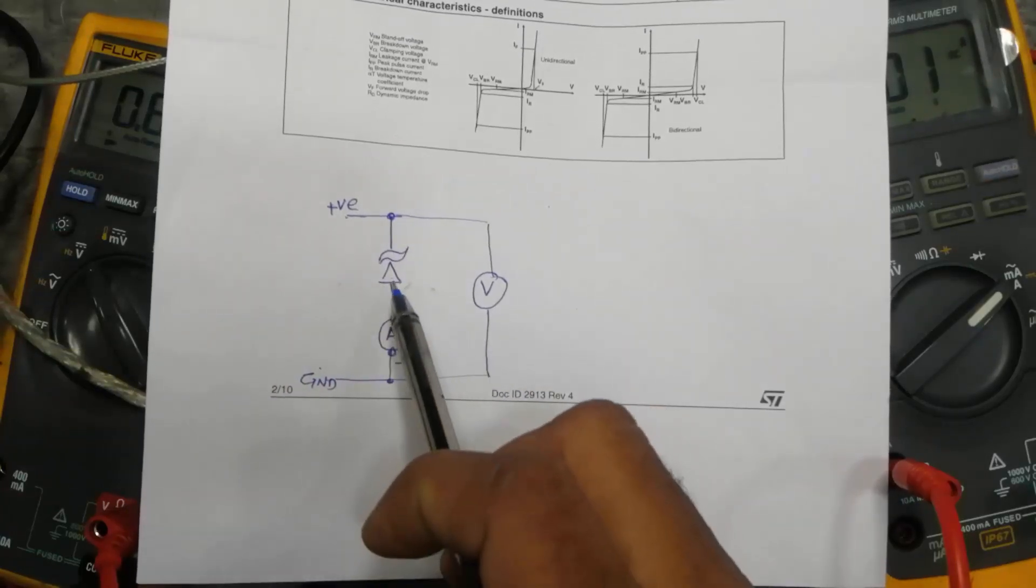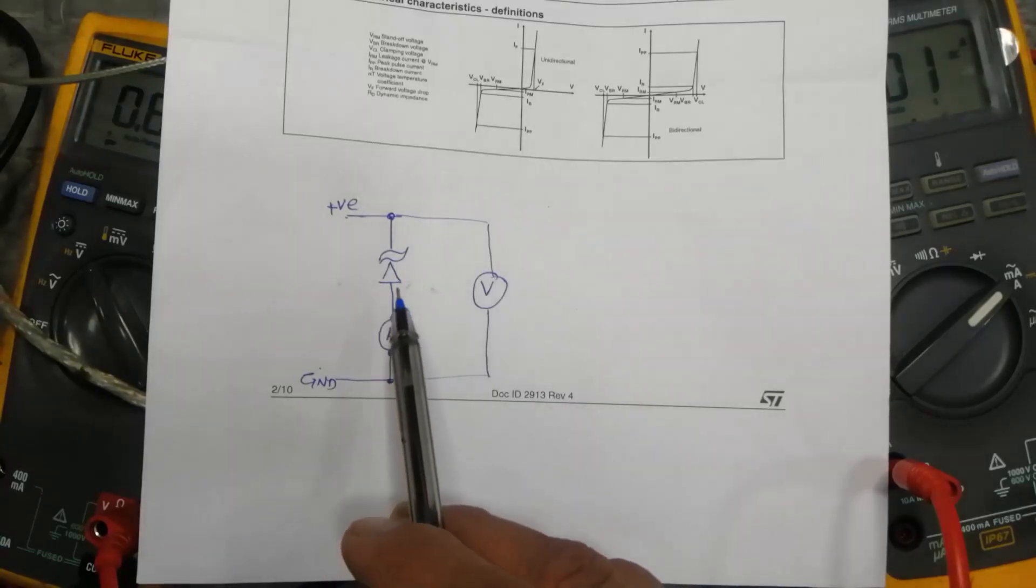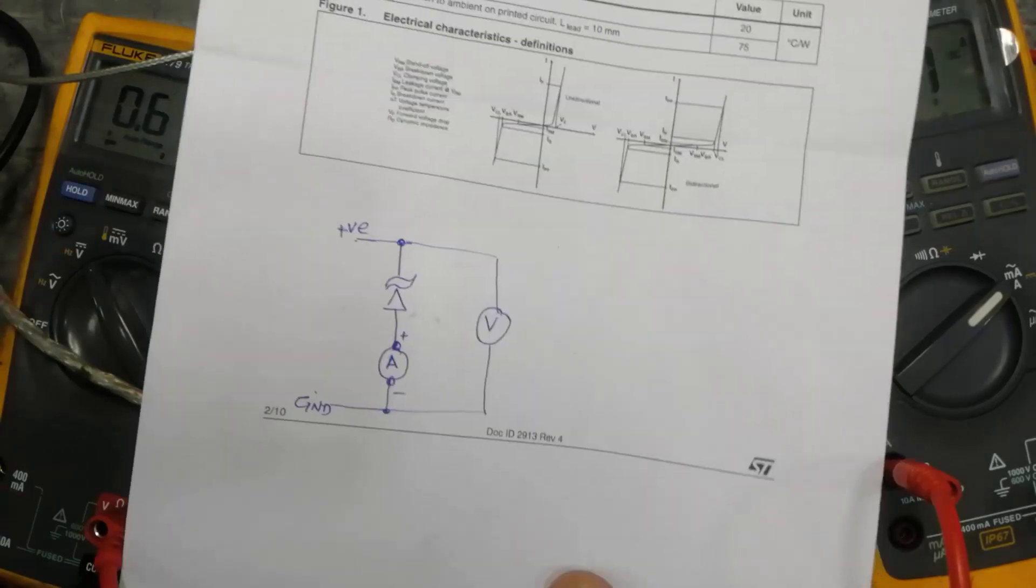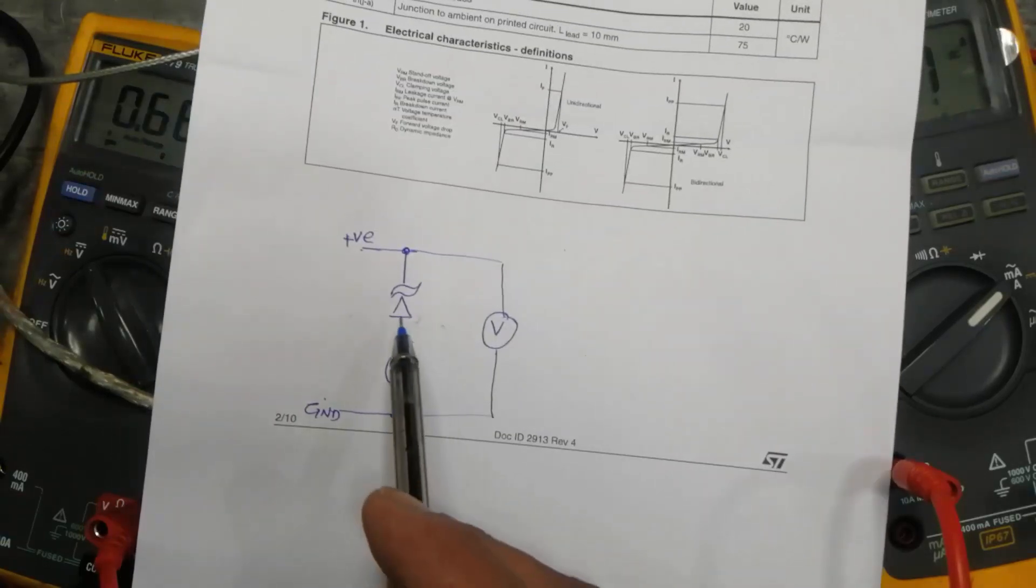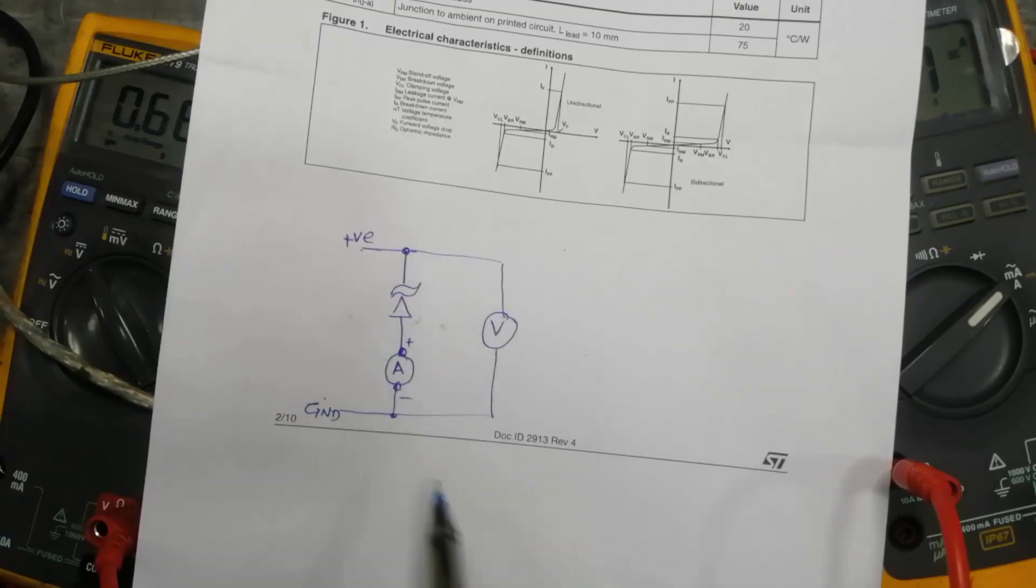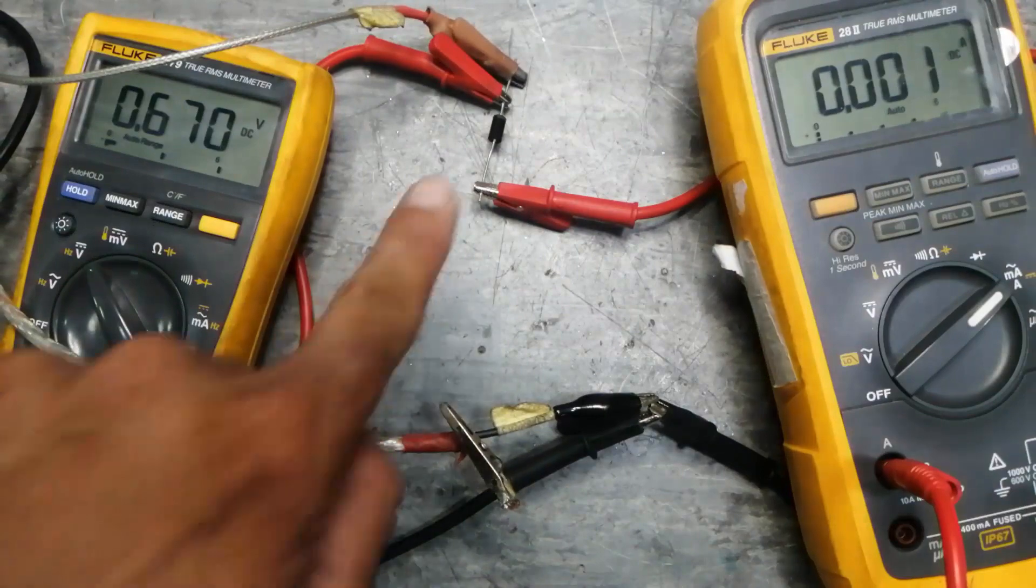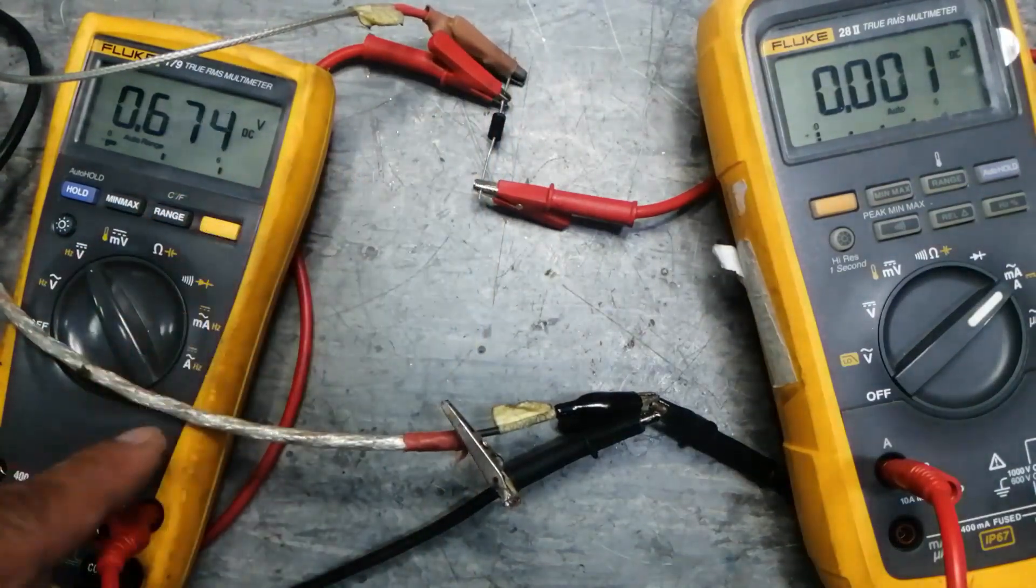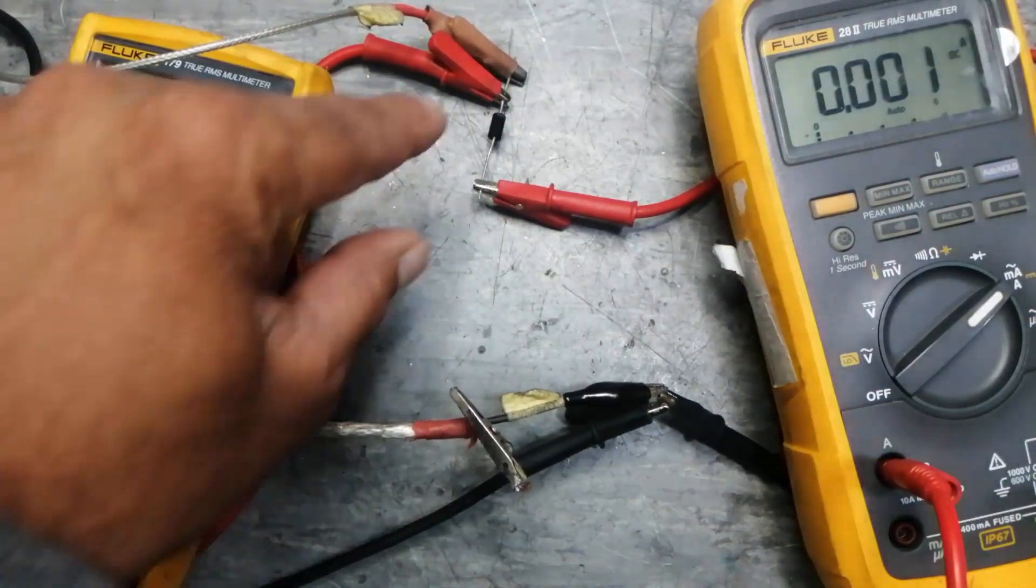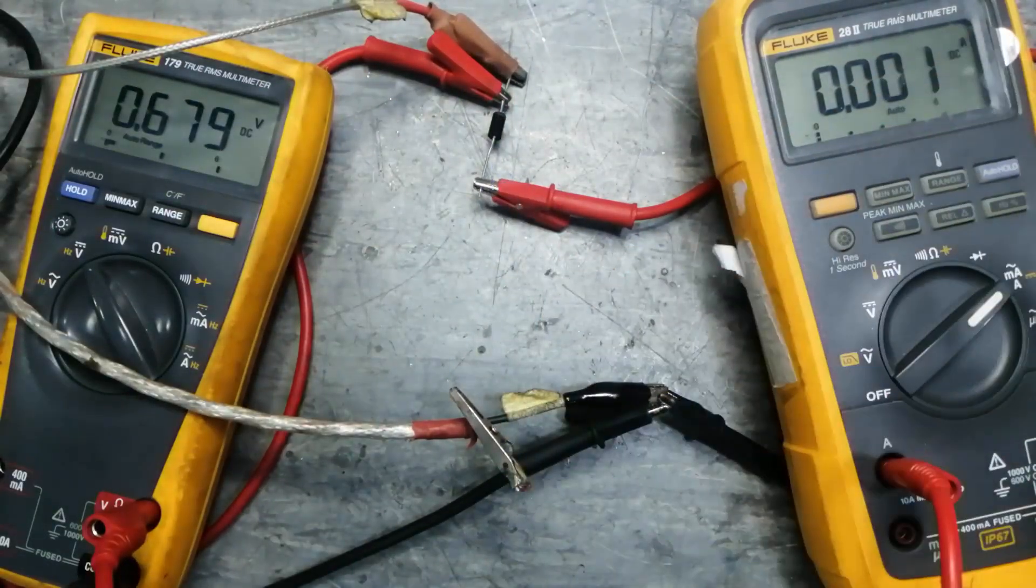I connected a TVS diode 1.5KE12A. It is a unidirectional transient voltage suppressor diode that works like a zener. I connected this TVS diode with an ammeter in series and a voltmeter in parallel. I connected this multimeter in voltage mode across the diode and connected this end to the ammeter.